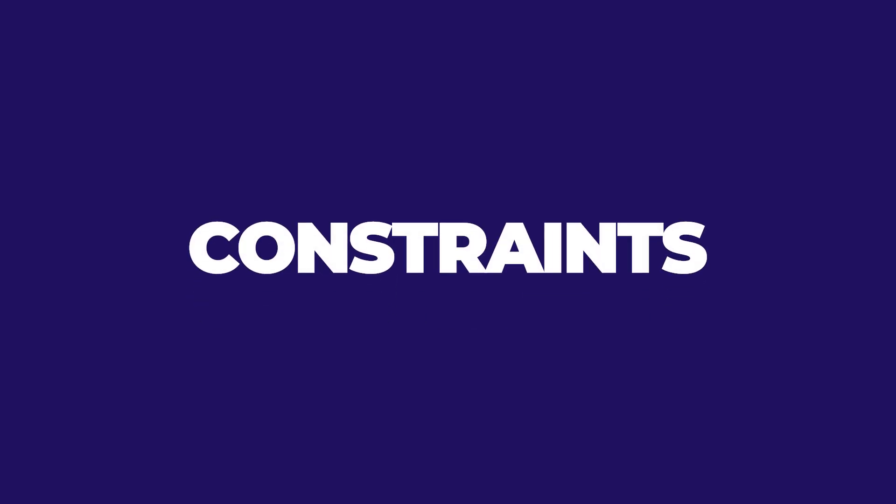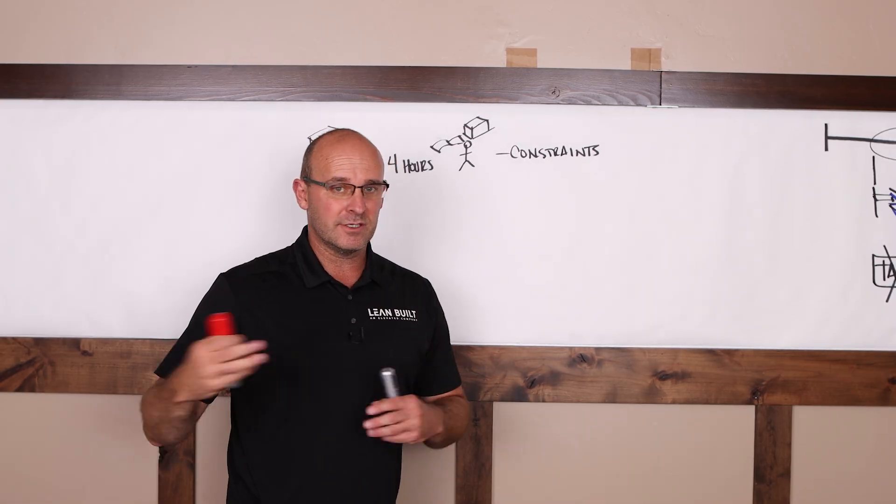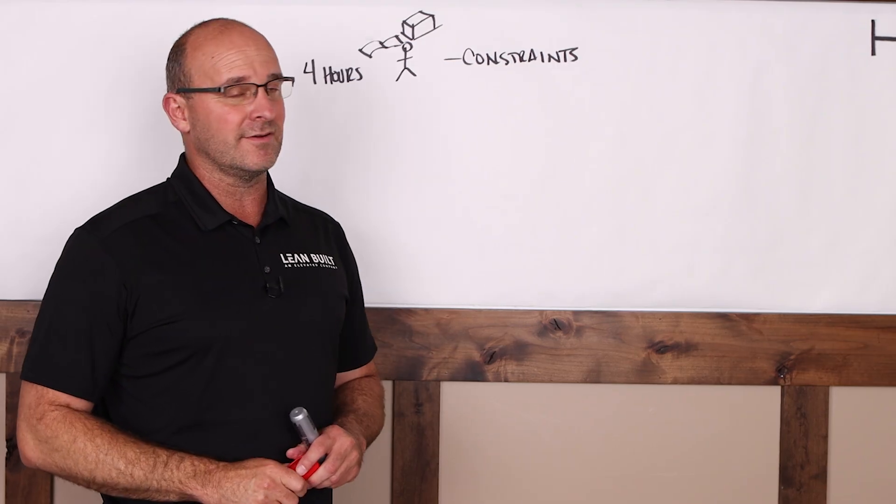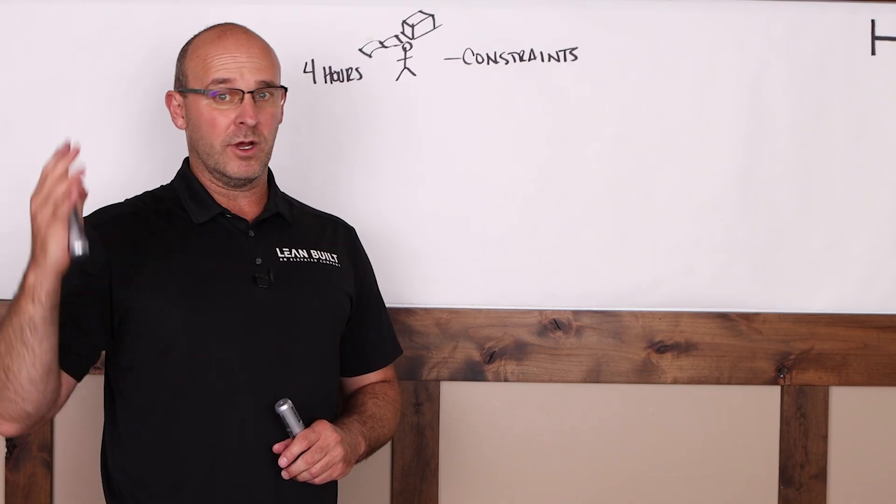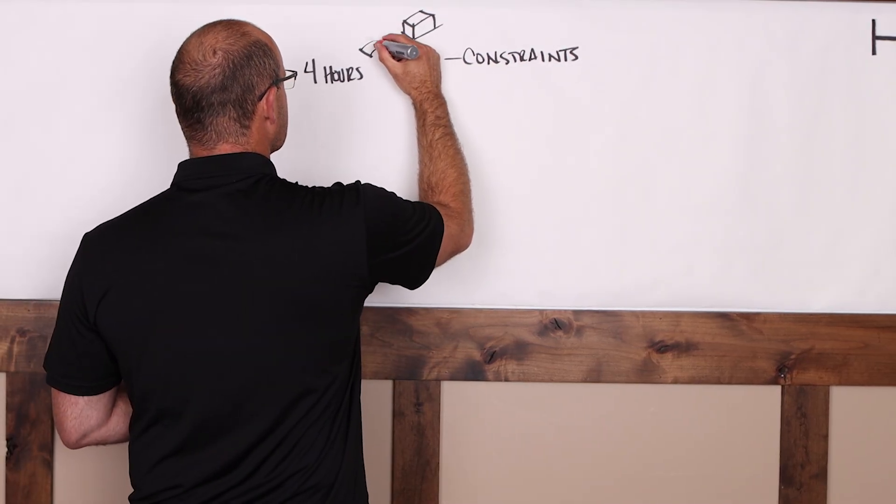Constraints. You're going to be looking at on the drawings and marking, is there anything constraining me? Is there an adjacent building? Is it required to wait seven days for waterproofing after we strip the wall forms? Like we're looking at different things that are constraining us.